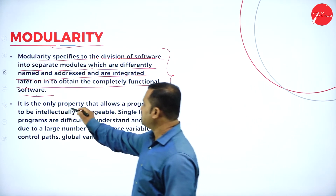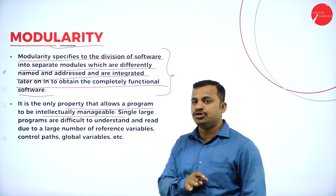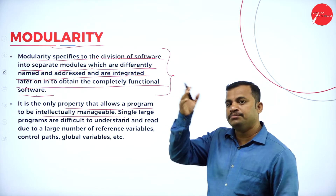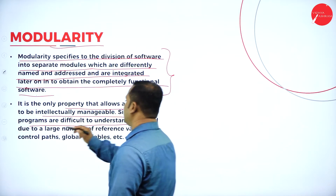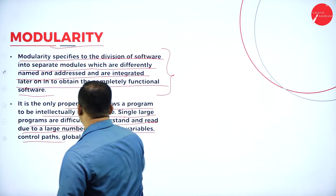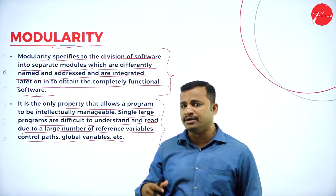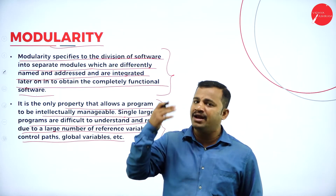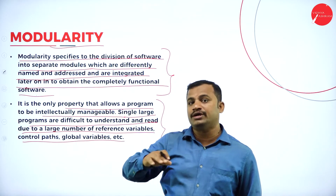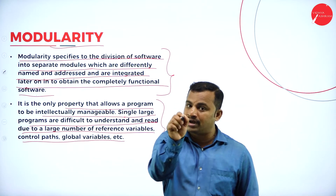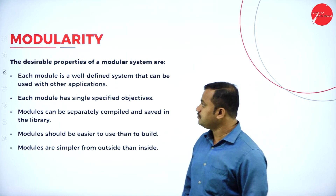Modularity is the only property that allows a program to be intellectually manageable — we can manage the modules very easily. Single large programs are difficult to understand and read due to a large number of reference variables, control paths, and global variables; even difficult to analyze. In order to make them analyzable for any programmer who wants to use, extend, or reuse the code written by another programmer, the program has to be modularized.